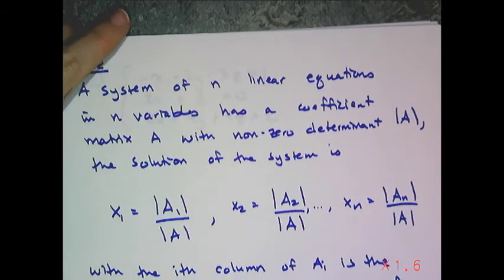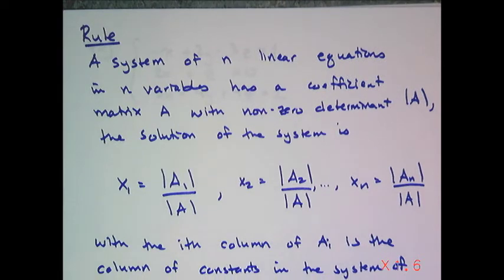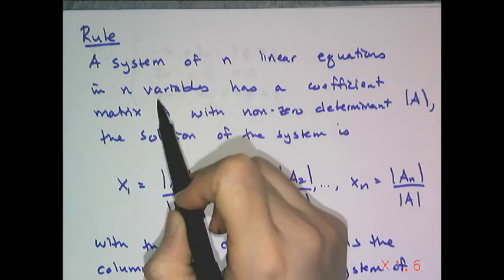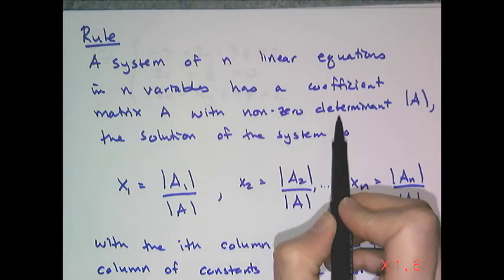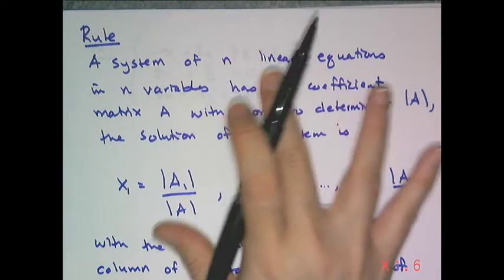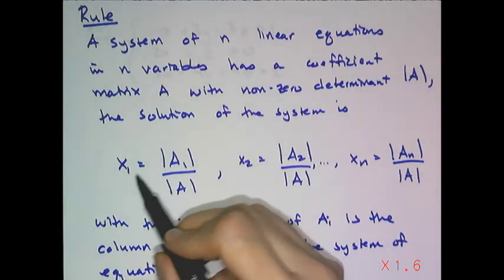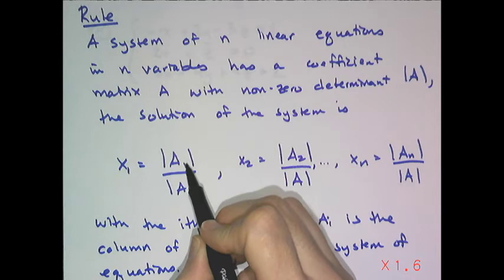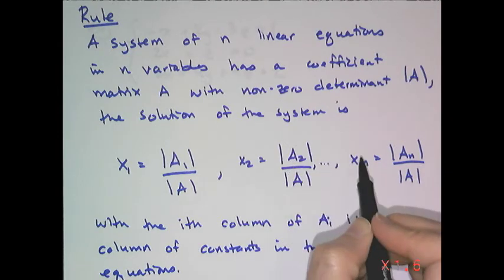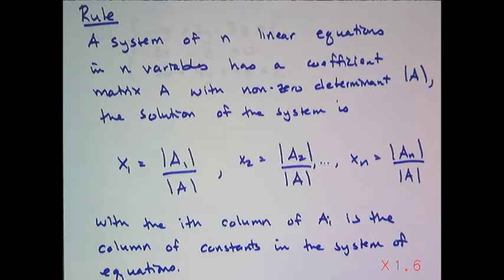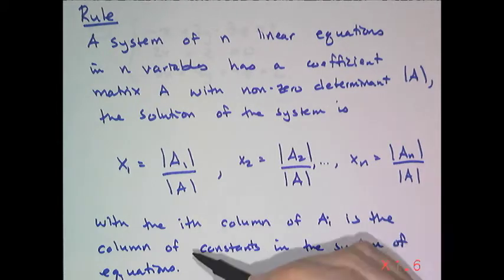Now this next thing is going to look very intimidating, but it's actually the formal definition of Cramer's rule. So it says a system of n linear equations in n variables, meaning square coefficient matrix, has a coefficient matrix A with non-zero determinant. And that's just how you write the determinant of A. This is all the if, right? The solution of the first x is the determinant A sub 1 over the determinant of A, second variable A sub 2 over A dot dot dot, nth variable is A sub n over A, where the i-th column is replaced of A sub i is the column of constants in the system of equations.